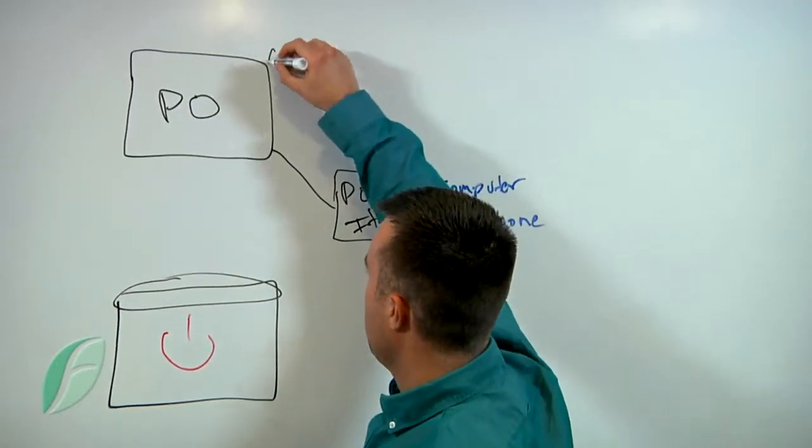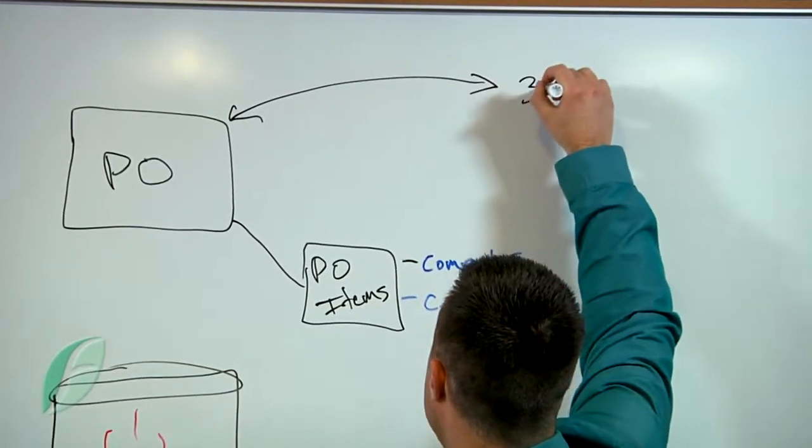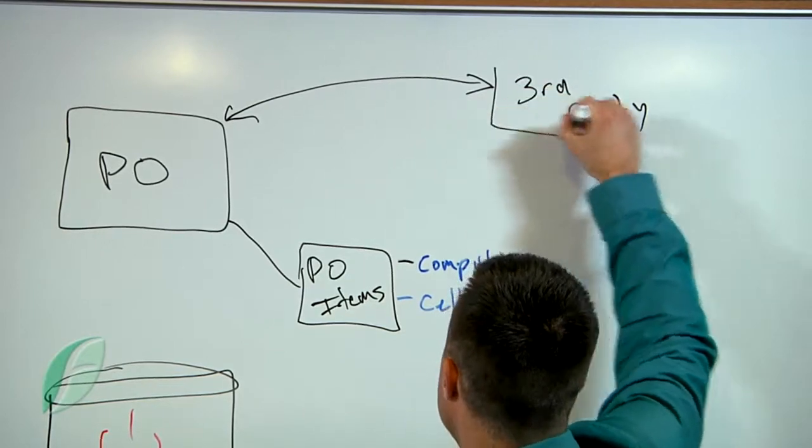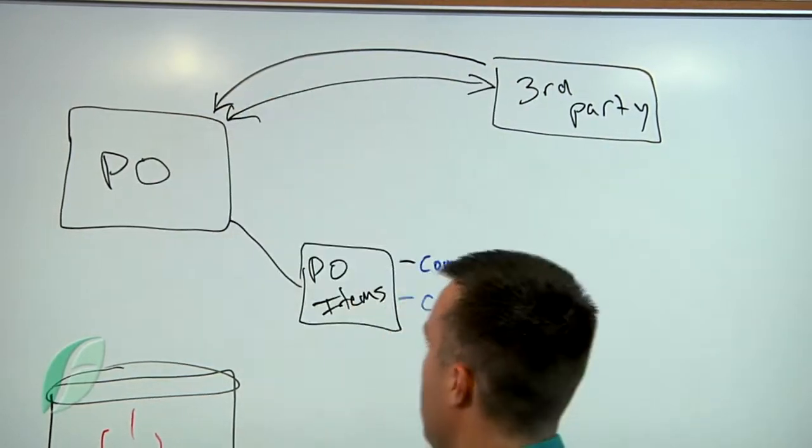So what our tool does, with a click of a button, it's going to send information to a third-party tool to generate a PDF of that purchase order and attach it to our record here.